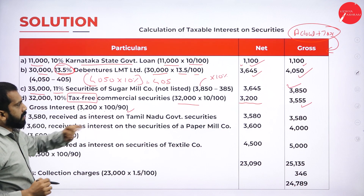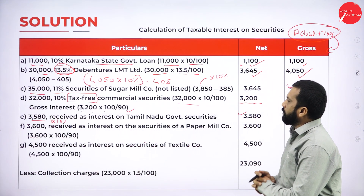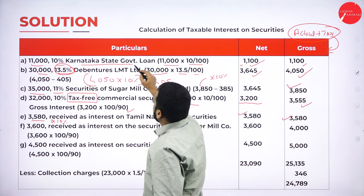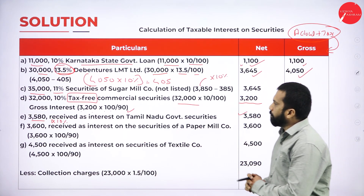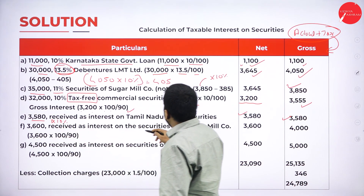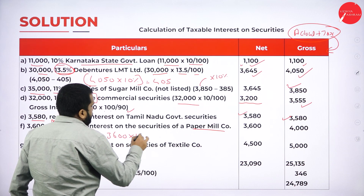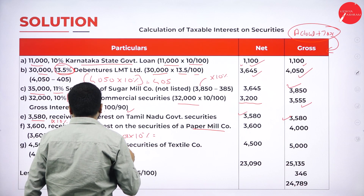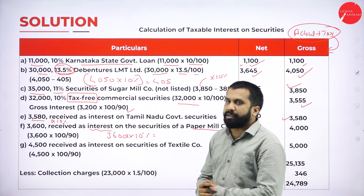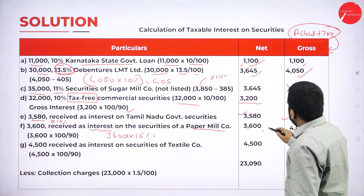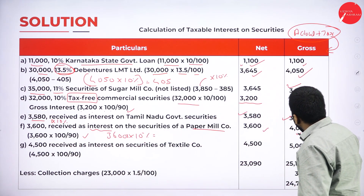Next: rupees 3,580 received as interest on Tamil Nadu Government security. For government securities like Karnataka or Tamil Nadu, we write the same value for both gross and net — 3,580. Then: rupees 3,600 received as interest on securities of Paper Mill Company, not listed. Because interest is directly given as received, we take 3,600 directly as net. For gross: 3,600 × 100/90 = 4,000.